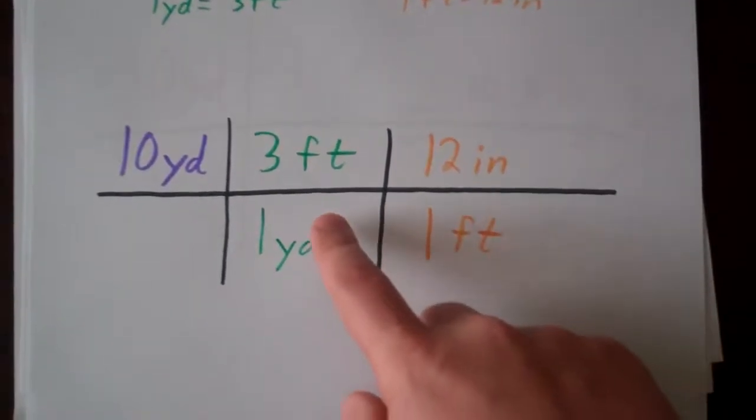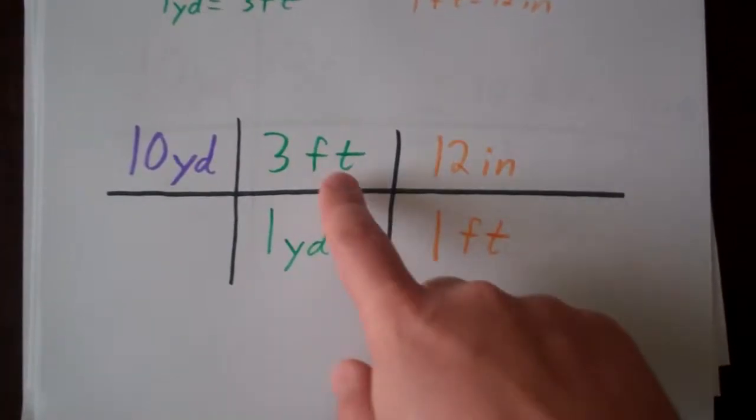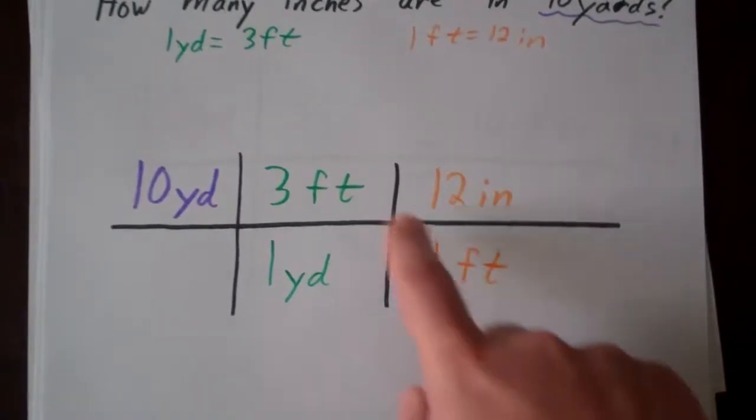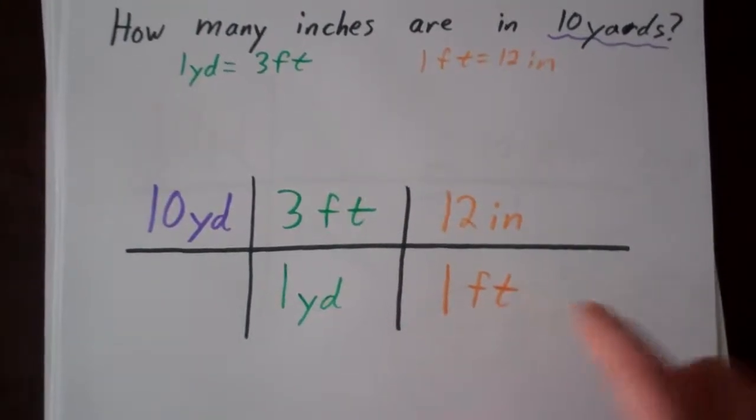Our next conversion rate will get us to inches. We have feet in the numerator, so now we need feet in the denominator so these feet will divide out. How does that work?